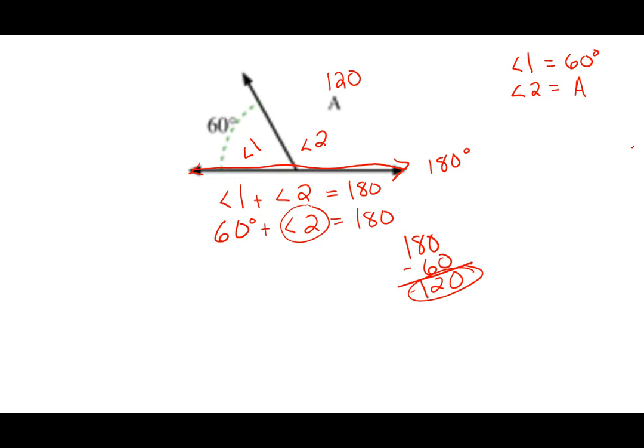But before we know that for sure, we have to go in and check it. So we're going to plug this measure, this angle measure, into this equation. So we're going to take 60 plus 120, and that should equal 180. So let's add 120 plus 60. 0 ones plus 0 ones gives me 0 ones. 2 tens plus 6 tens gives me 8 tens. And then 100 plus 0 hundreds gives me 180. So this equation checks out. Both sides make this equation balanced, and the measure of angle 2 is 120 degrees.